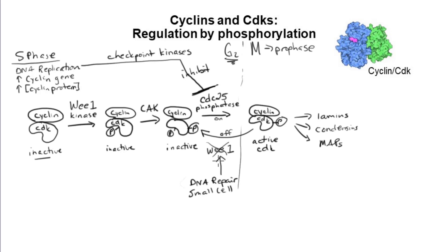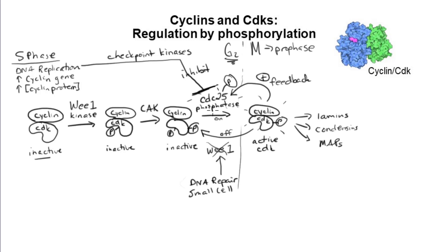There's a positive feedback twist: another target of activated cyclin-CDK is CDC25 itself. When cyclin-CDK is activated, it phosphorylates CDC25 to make it even more active. So CDC25 dephosphorylates more cyclin-CDK complexes, which activates more CDC25, which activates more cyclin-CDK — and so on. This rapid activation of CDK leads to immediate onset of mitosis and entry into prophase. This type of positive feedback is useful for molecular events the cell wants to initiate and get through quickly, like mitosis.